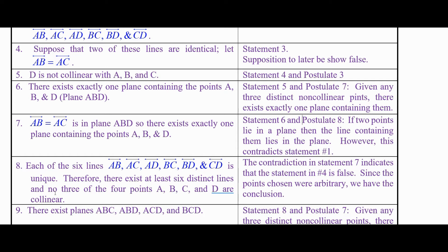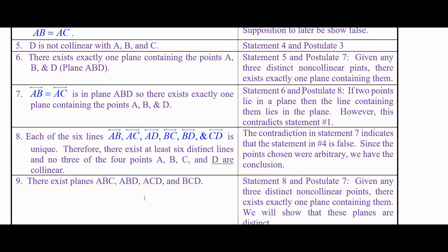Now we can say there exist planes ABC, ABD, ACD, and BCD. Each is a unique plane containing those three points — it may or may not contain other points. To establish this we use the fact that no three of the four points are collinear, along with Postulate 7: given any three distinct non-collinear points there exists exactly one plane containing them. So taking any three of these four points gives exactly one plane.